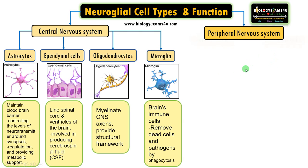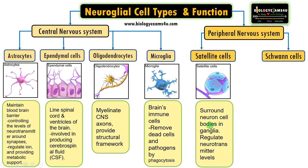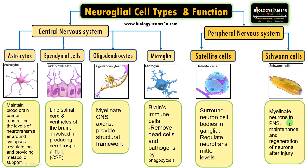The peripheral nervous system has two types of glial cells: satellite cells and Schwann cells. Satellite cells surround neuron cell bodies in ganglia and regulate neurotransmitter levels. Schwann cells myelinate neurons in the peripheral nervous system and are involved in maintenance and regeneration of neurons upon injury. These are the major functions of different types of glial cells.